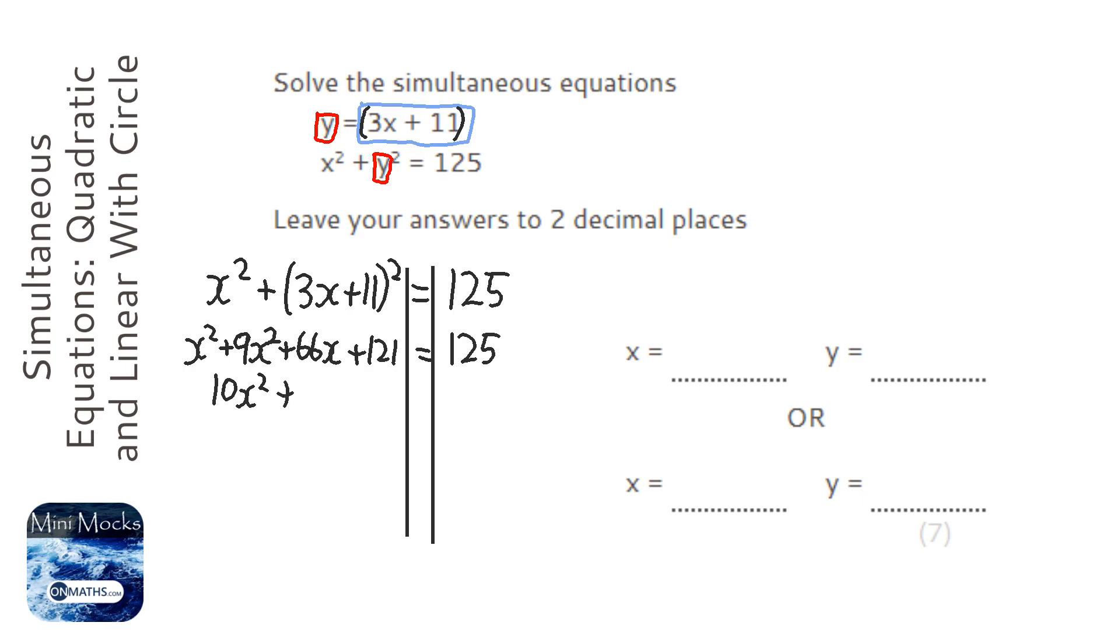And we've got the plus 66x plus 121 equals 125. So we need to get rid of that 125, bring that across. So we need it equal to 0 to use the quadratic formula.